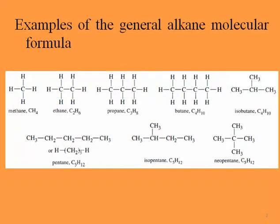We have some examples of general alkane molecular formulas. As you see, from the top left we have methane, then ethane, propane, butane, isobutane, pentane, isopentane, and neopentane. For the unbranched ones: methane has one carbon atom, ethane has two, propane has three, butane has four, and pentane has five carbon atoms.